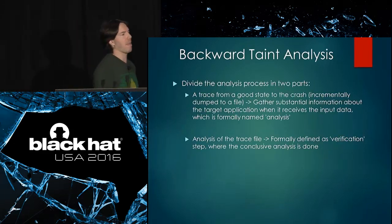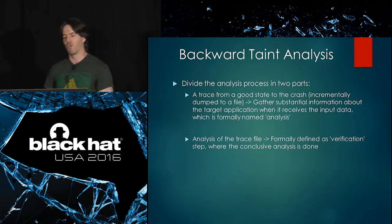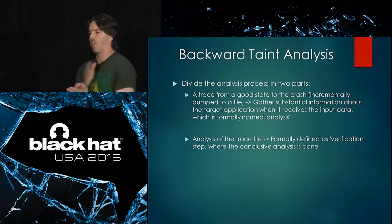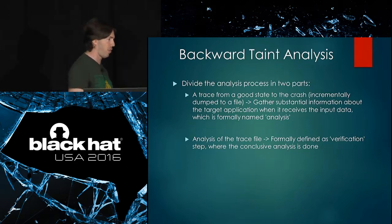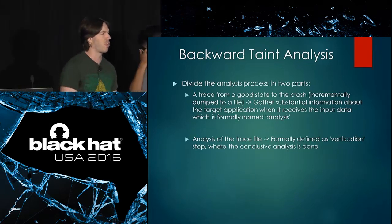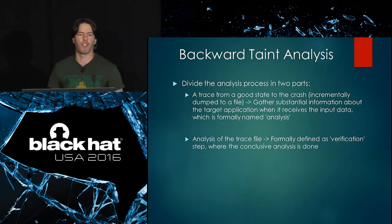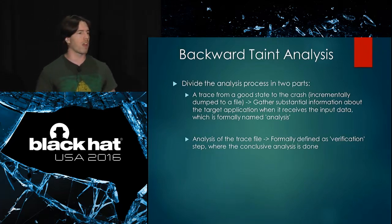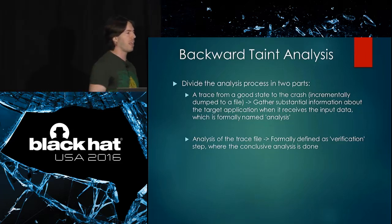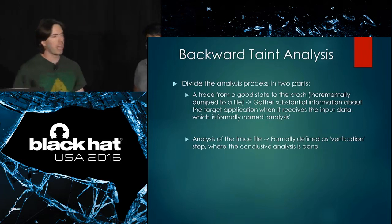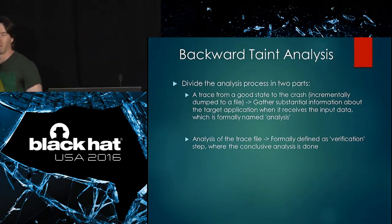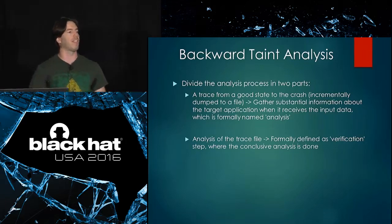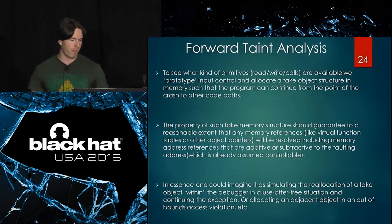For backward taint, the process is divided into two parts: tracing — executing and single-stepping the program — and analysis, the verification step. We traced 10 million instructions in Adobe and 800,000 in Internet Explorer. It is slow due to single-stepping, but we have ideas to optimize it — excluding certain modules, emulating certain flows.